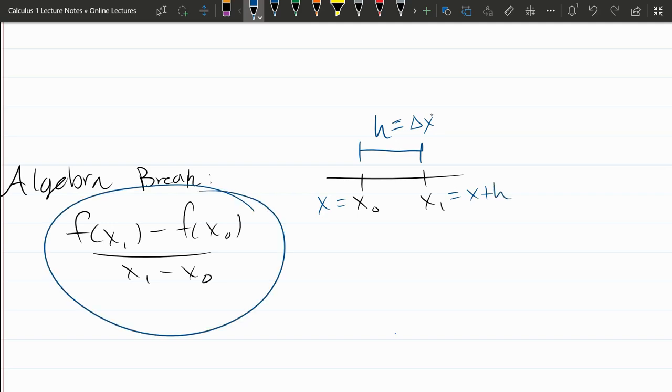What I'm going to do is now rewrite and substitute in here. Where I had x0 I'm going to put in x, and where I had x1 I'm going to put in x plus h. So we have f of x1, which is now x plus h, minus f of x0, which is now just regular x.